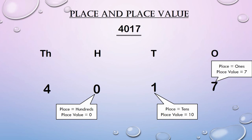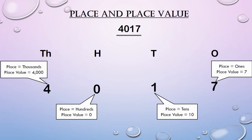4 is in the 1000's place. Students, a place value chart is used to help understand the value of each digit based on its place or position.